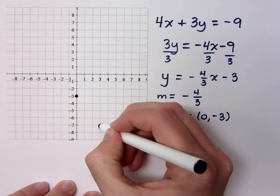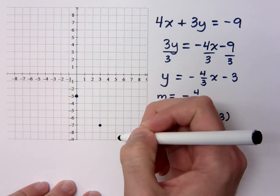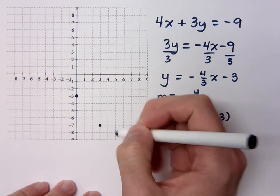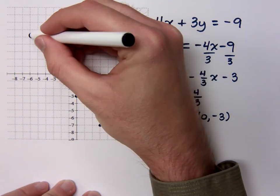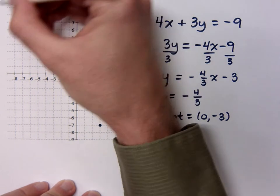Down 4 over 3. I'm out of room. I can't go any further. How do I fix this? Go up 4 to the left 3. Up 4 to the left 3. Keep doing this until you run out of room.